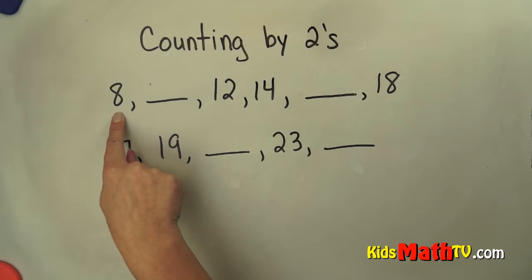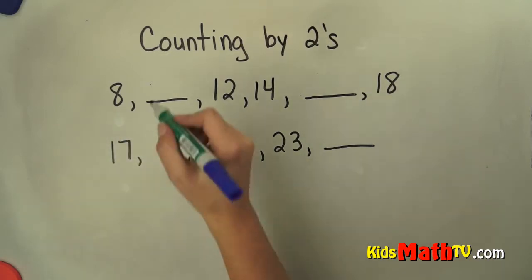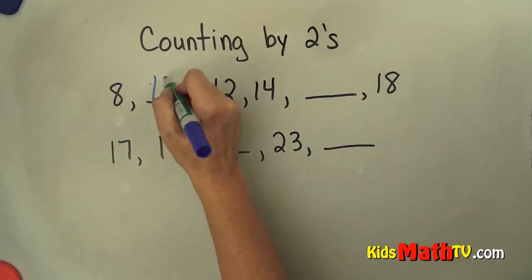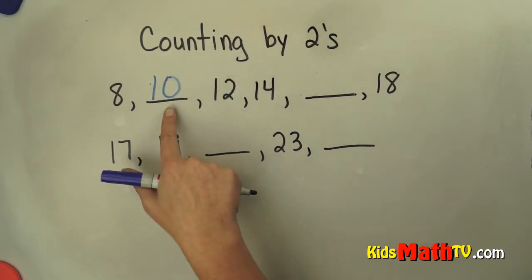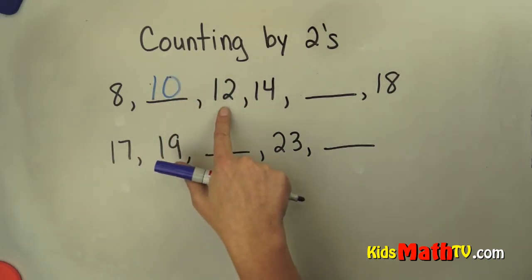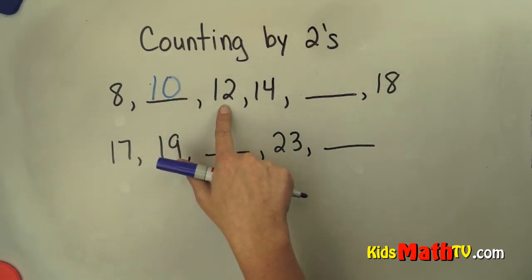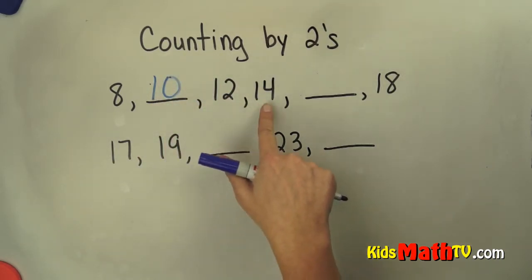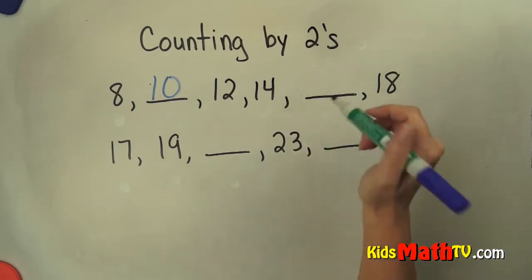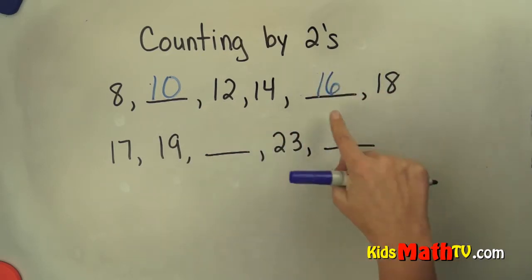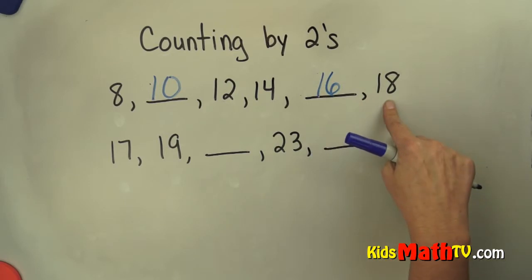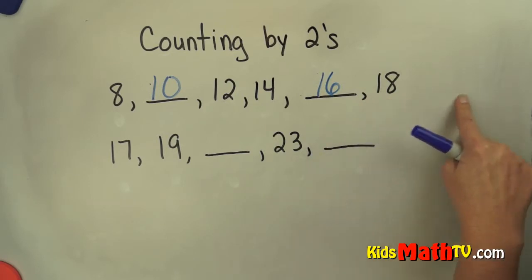So 8 plus 2 is 10. 10 plus 2 is 12. 12 plus 2 is 14. 14 plus 2 is 16. 16 plus 2 is 18. And I could keep going if I wanted.